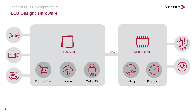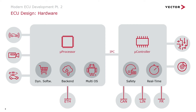The bus systems connected to each side also differ. On the microcontroller side, you have the classical bus systems like CAN, LIN, and FlexRay. On the microprocessor side, we mainly use Ethernet. The IPC — inter-processor communication — is also important. Depending on whether both systems are on the same chip (SoC design) or on two separate controllers, different technologies are used: shared memory, PCI Express, or SPI. This communication link needs to be fast and reliable.